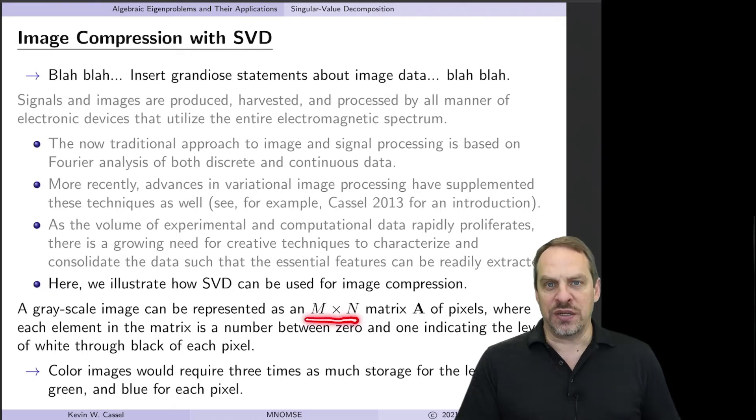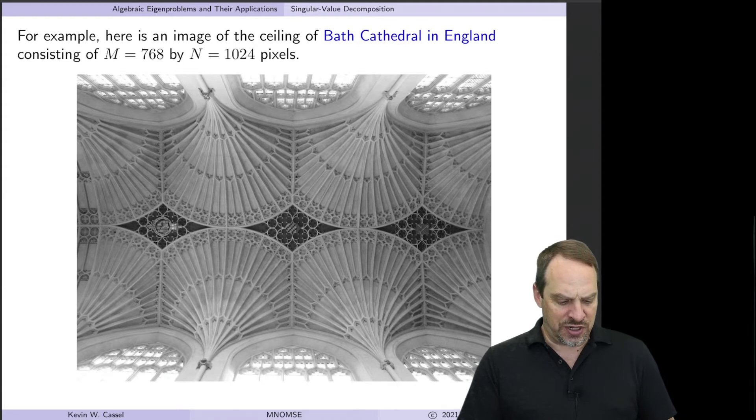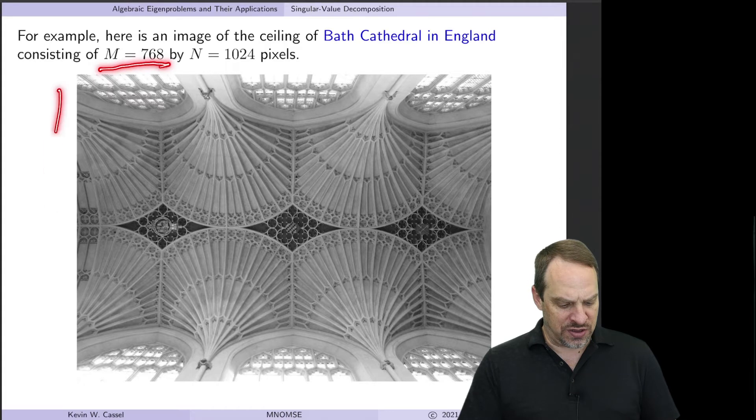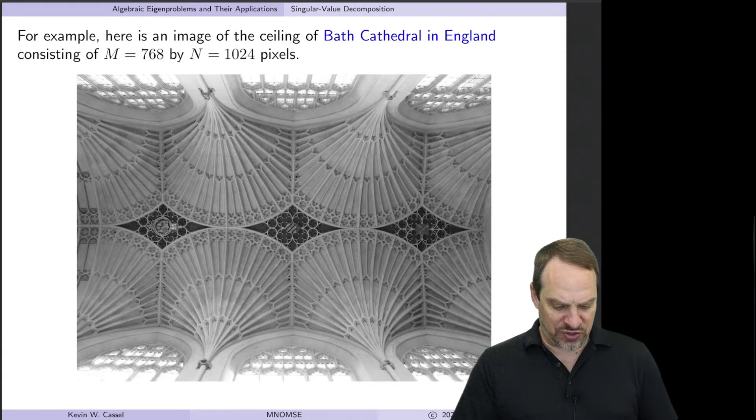So M times N, that's the total number of pixels in the image. We're going to take an image of the ceiling of Bath Cathedral in England. You'll see it here, the original image is 768 by 1024, and that gives you the total number of pixels.